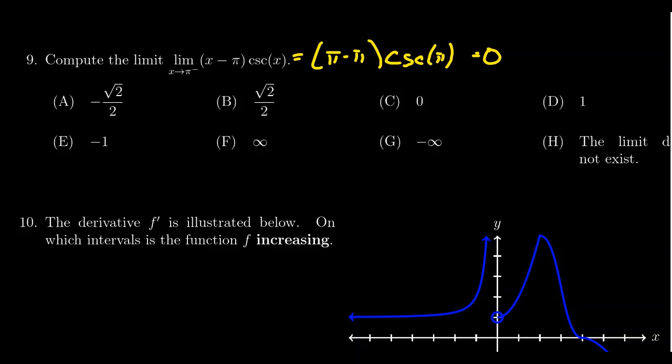Remember, cosecant is cosine over sine, and sine of pi equals zero, so this looks like zero times infinity because pi is a vertical asymptote for cosecant.